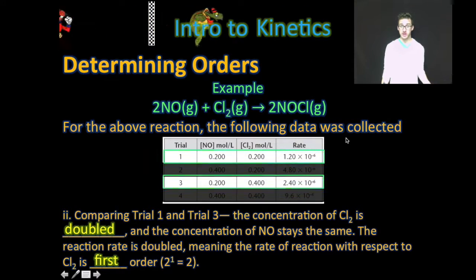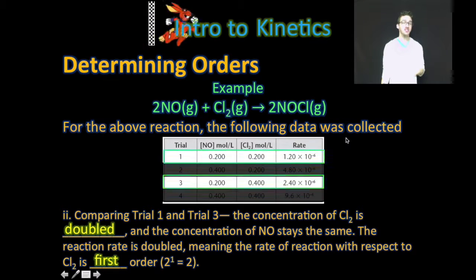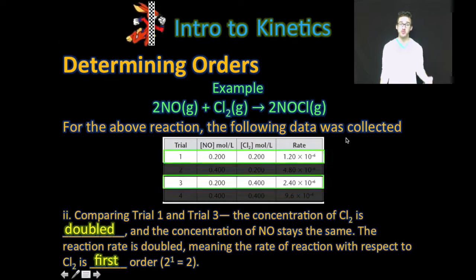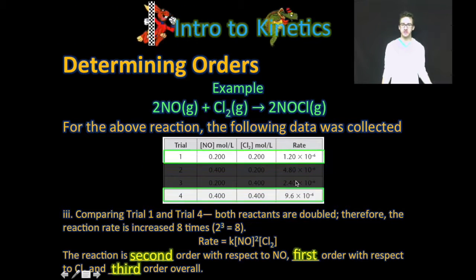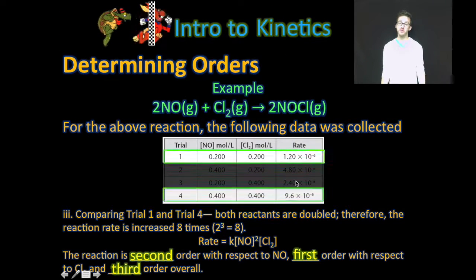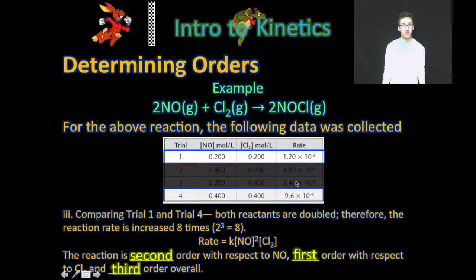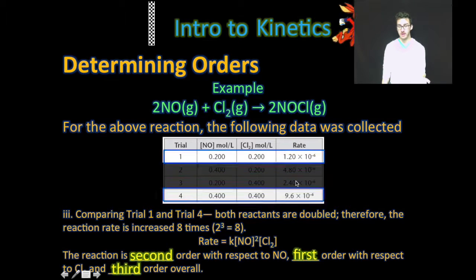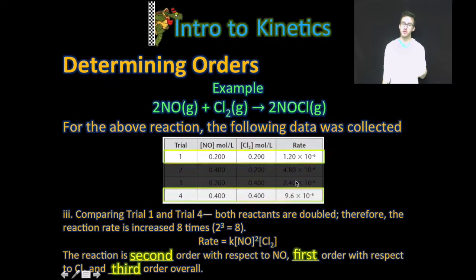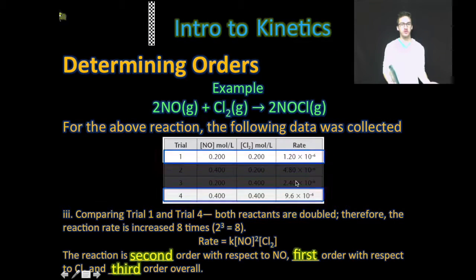Now let's compare trials one and three. In this example, the concentration of chlorine is doubled while the concentration of NO remains the same. Therefore, any change in rate must be a result of the change in concentration of chlorine. The rate is doubled when the concentration of chlorine is doubled, meaning the reaction is first order with respect to chlorine. To determine the overall reaction order, simply sum together the orders of the individual reactants, giving us third order overall. We can confirm that by comparing trials one and four, where both reactants are doubled and the reaction rate increases eight times.